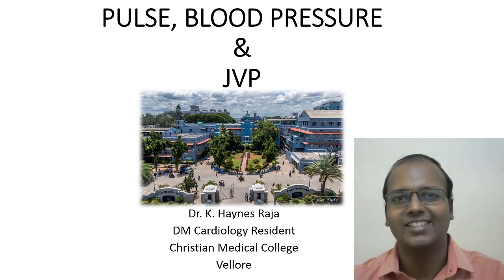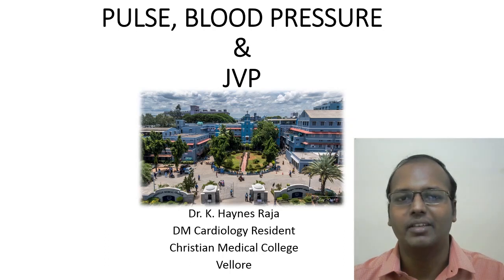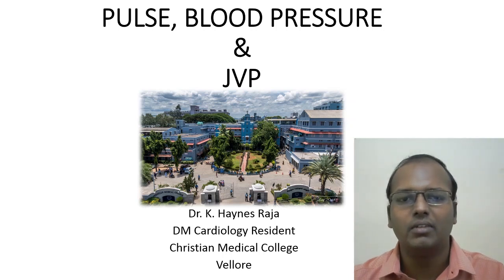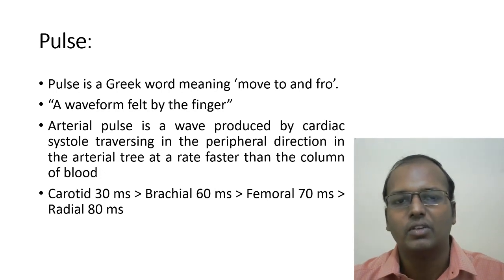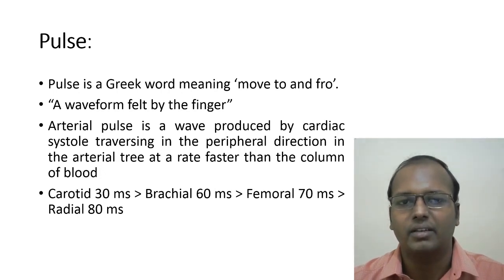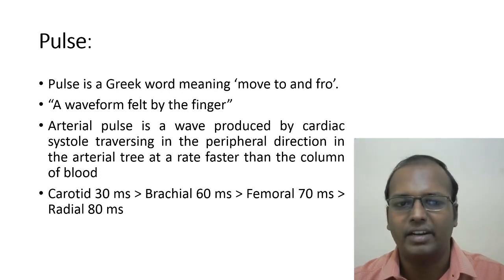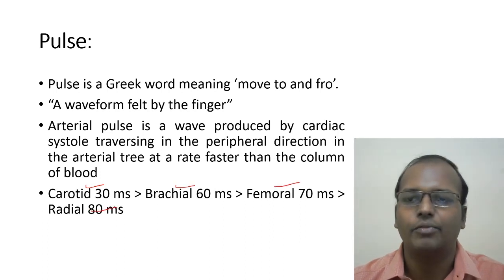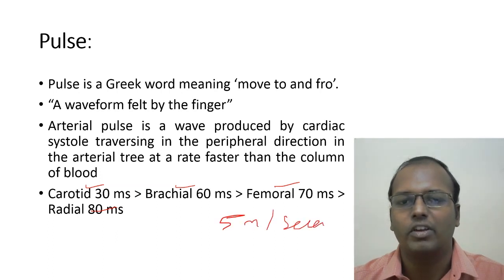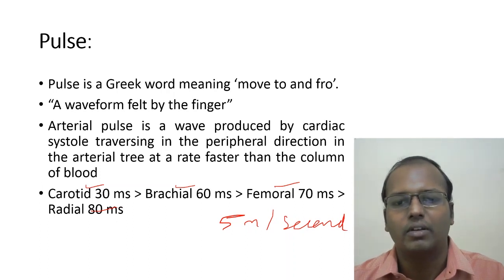Welcome to the cardiology clinicals classes. In this video, I will teach you about pulse, blood pressure, and JVP — these are important components in cardiovascular system examination. Pulse is a Greek word meaning 'to and fro.' What we feel is the waveform, not the blood column. When cardiac contraction occurs, it produces a waveform that traverses peripherally. The speed of the pulse wave is five meters per second.